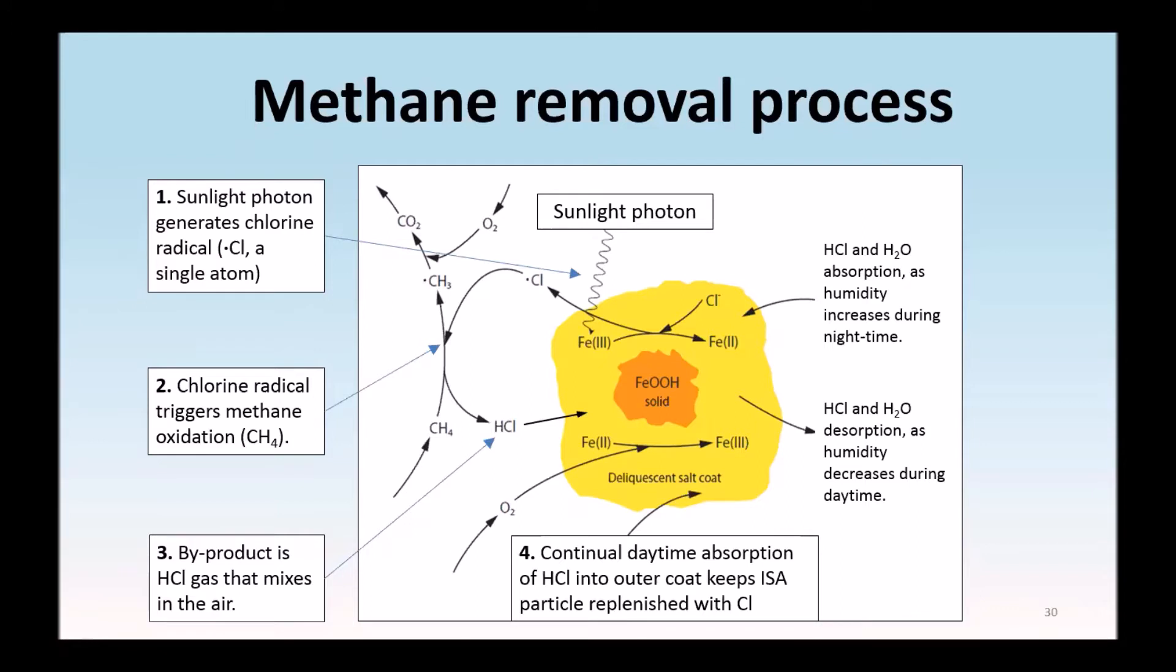Here it is in more detail. At the heart of it, we have iron 3 getting photolyzed to iron 2. You might be interested, iron is used a lot by life because it easily changes its oxidation state between 3 and 2.